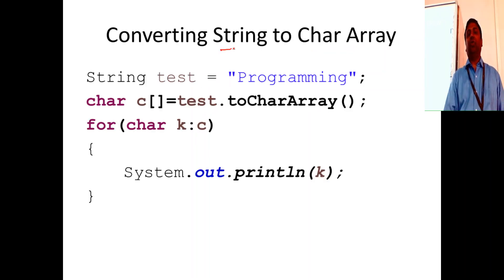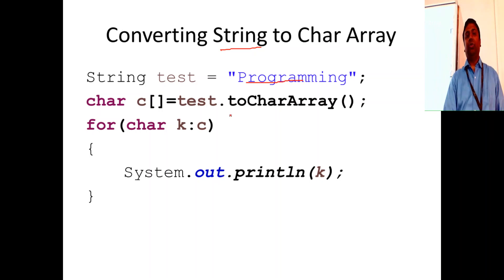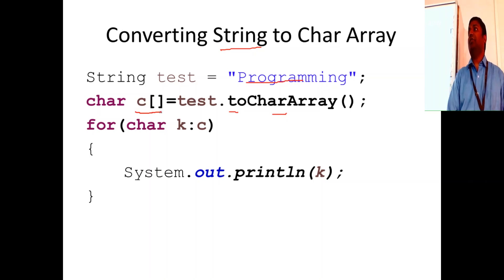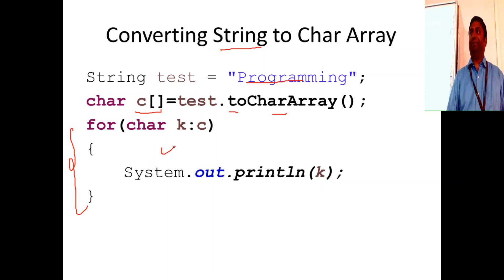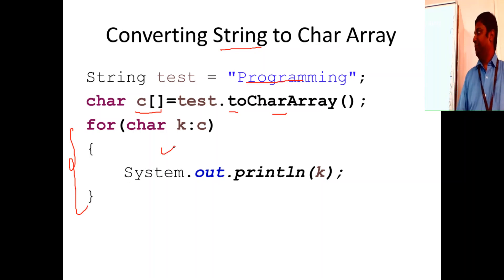To convert a string to a character array, use `.toCharArray()`. This converts the string into a set of characters stored in a char array. You can then declare a char array to hold all the characters and use an enhanced for loop to print them.